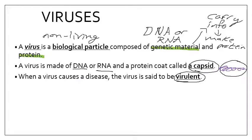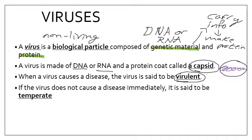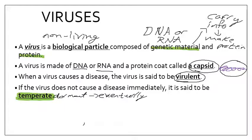When a virus causes a disease, it's said to be virulent. If it doesn't cause a disease right away, we consider that virus to be temperate — it may cause disease later but can sit dormant for a while. So you have two categories: temperate, which will eventually cause disease, and virulent, which causes disease right away upon infection.